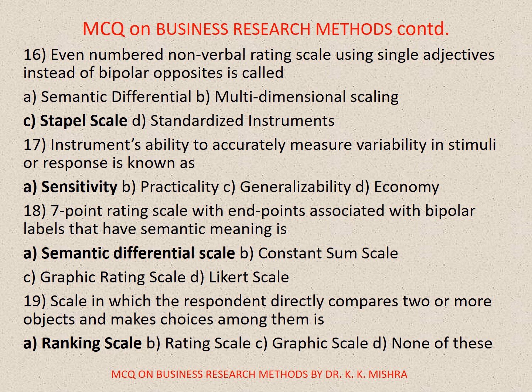Question number nineteen. A scale in which the respondent directly compares two or more objects and makes choices among them is. Options are: A. Ranking scale, B. Rating scale, C. Graphic scale, D. None of these. Correct option is A. Ranking scale.